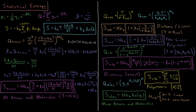This video will discuss entropy in statistical mechanics. In statistical mechanics, out of all the energy levels that our system has available to it, the probability of the system being in that energy level is equal to 1 over the partition function Q, times the degeneracy G sub i, times e to the minus beta E_i — the Boltzmann factor — where beta is 1 over the Boltzmann constant times the temperature.